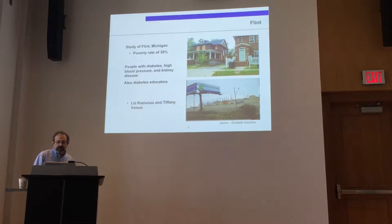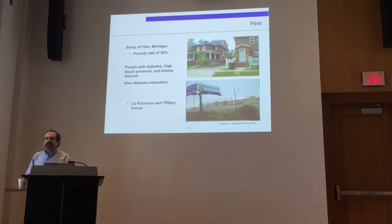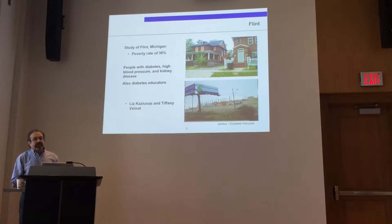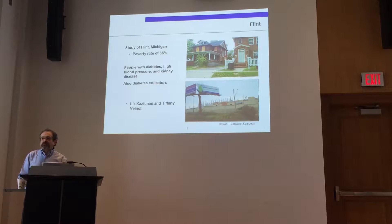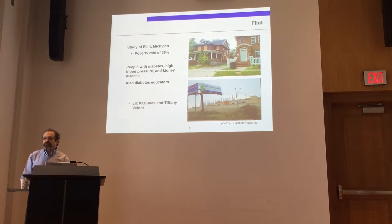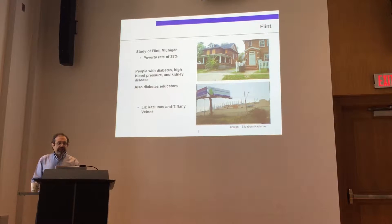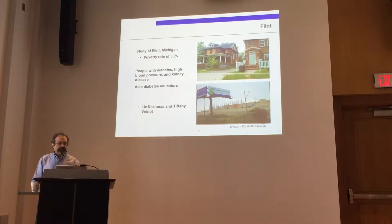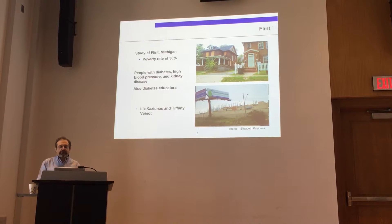We started with a study that Liz, Tiffany Veneau, and I did in Flint, Michigan. These are beautiful houses that have been boarded up because Flint is depopulating like crazy. The automobile industry has basically pulled out — there's not a lot of industrial or commercial base left. The inner city of Flint has a poverty rate of about 38%, it's one of the highest crime areas in the United States, and it has a lot of people with diabetes, high blood pressure, and kidney disease.